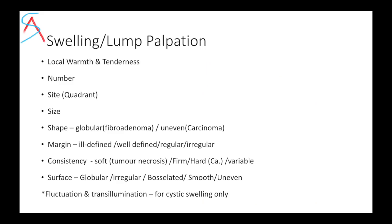If any lump is palpated, describe local warmth and tenderness over the lump, and its number, site, size, shape, margin (well-defined or ill-defined), and consistency (soft, firm, or hard). In breast carcinoma it would generally be hard. Note whether the surface is globular, irregular, bosselated, smooth, or uneven — uneven would be seen in carcinoma. If the consistency is cystic, perform a fluctuation and transillumination test over the swelling.